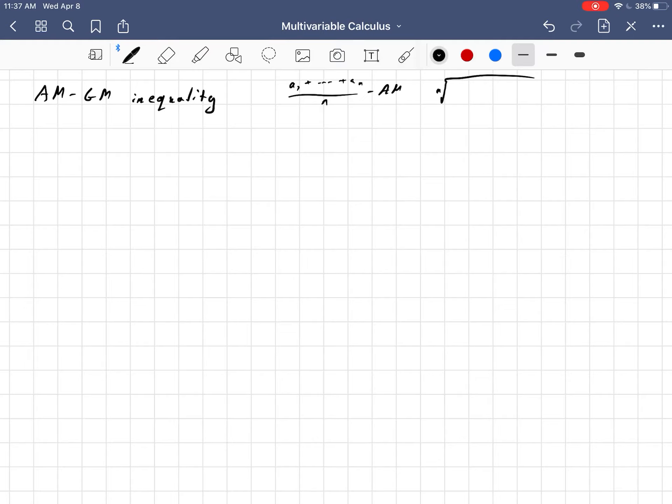The geometric mean is taking the nth root of—there's n numbers—the nth root of the product of all of those numbers.